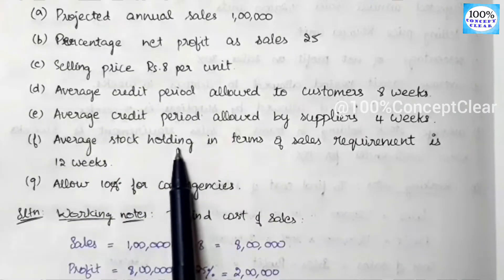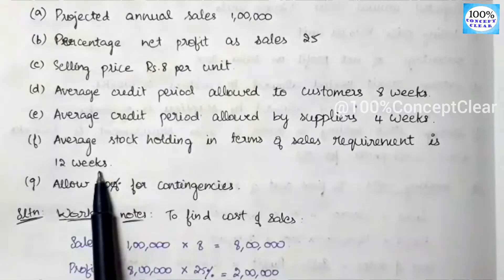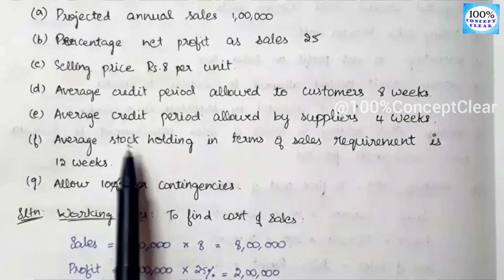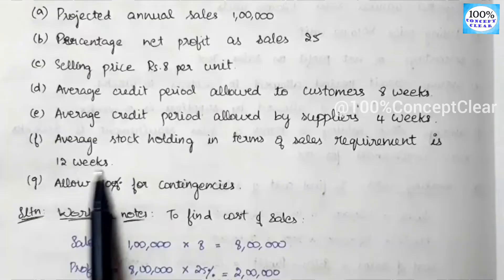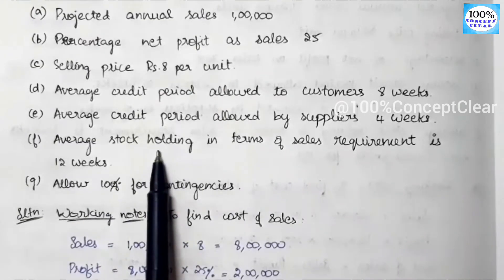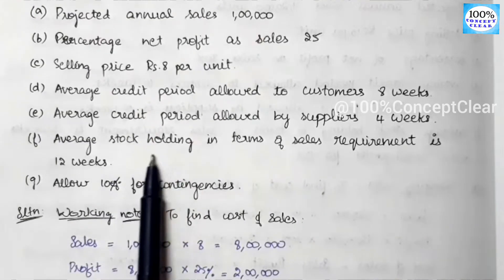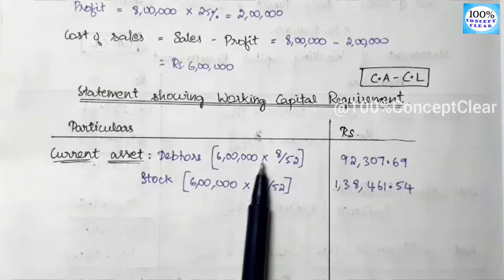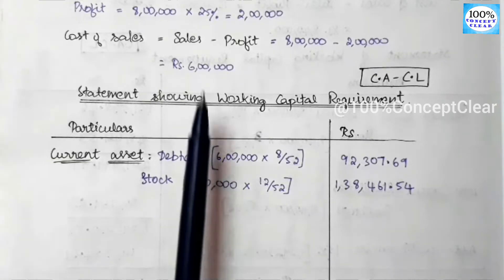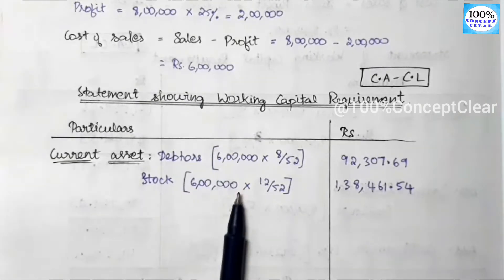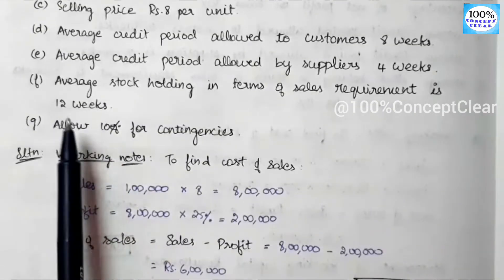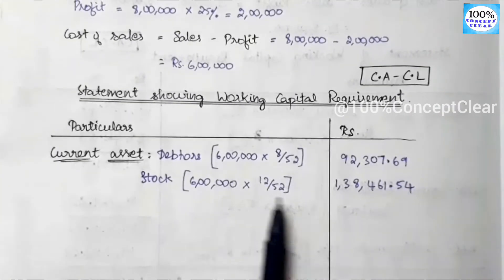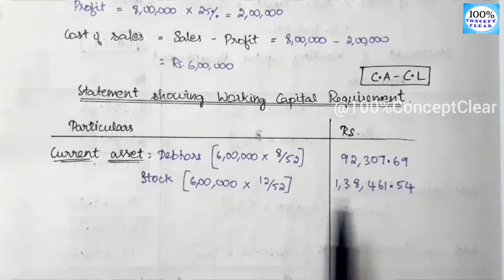Next, the average stock holding in terms of sales requirement is 12 weeks, so we have closing stock. The closing stock is a current asset item. The calculation is: Cost of Sales × 12/52. So ₹6 lakh × 12 ÷ 52, because we have a period of 12 weeks.